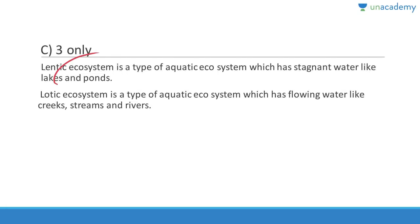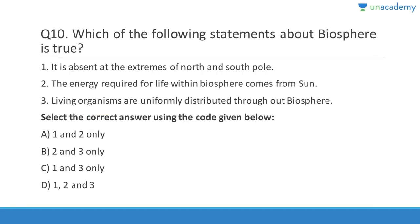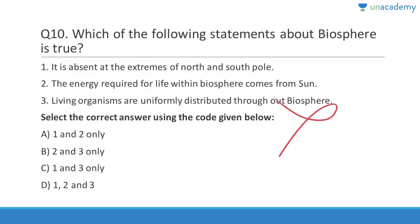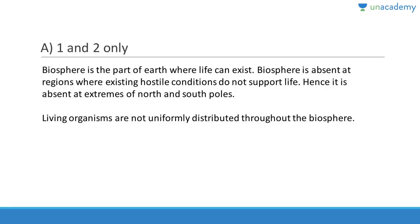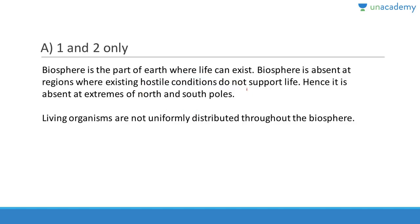Last question for this set: Which of the following statements about biosphere is true? It is absent at the extremes of the north and south poles — correct. The energy required for life within the biosphere comes from the sun — also correct. Living organisms are uniformly distributed — that is wrong. Answer is A, one and two. Biosphere is that part of Earth where life can exist, and it is absent in regions with extreme hostile conditions. Living organisms are concentrated in the tropics and decrease as we go in either direction.